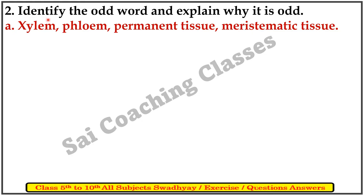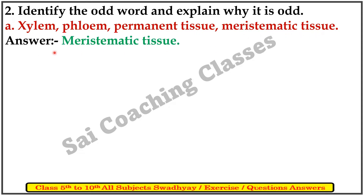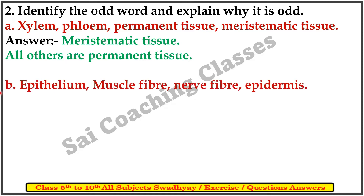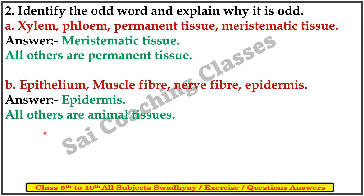Second question: Identify the odd word and explain why it is odd. A. Xylem, phloem, permanent tissue, and meristematic tissue. Answer: Meristematic tissue is the odd one. All others are permanent tissue. B. Epithelium, muscle fibers, nerve fibers, and epidermis. Answer: Epidermis is the odd one. All others are animal tissue.